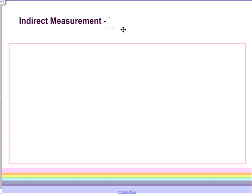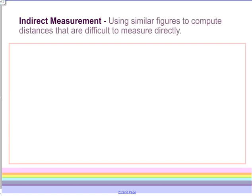First of all, we need to know what is indirect measurement. Well, indirect measurement is when you are using similar figures to compute distances that are difficult to measure directly.